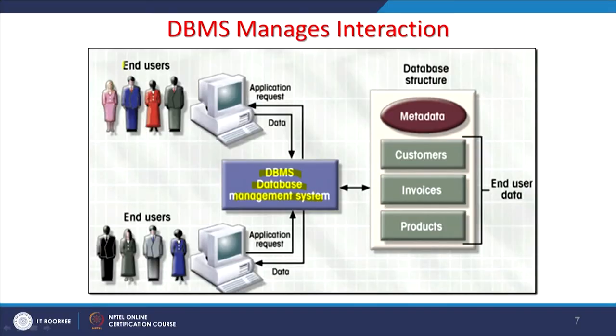In a database management system, there will always be end users at different ends who interact with the system through application requests, and data flows in two directions. The database management system handles data as per the chosen database structure, maintaining metadata and handling customers, invoices, and products depending on the organisation. This is a typical database management interaction — for example, a company with an online sales system maintaining end-user data in an organized fashion.